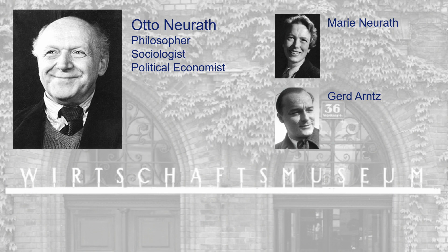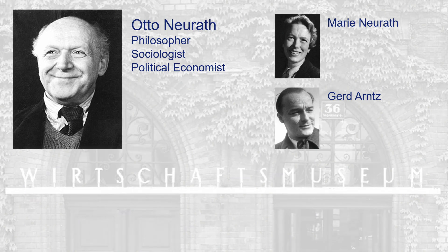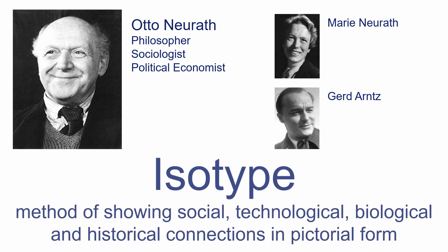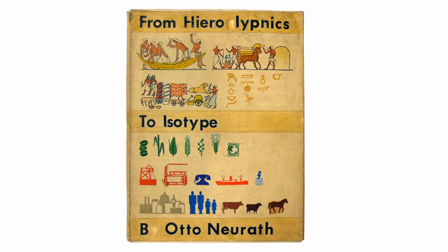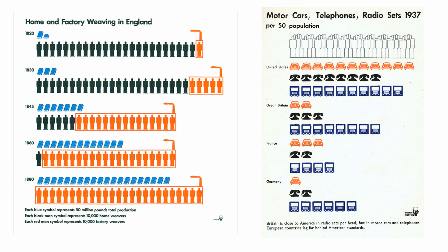These three folks on screen — Otto Neurath, his wife Marie, and Gerrit Ernst — were actually responsible for codifying a lot of the rules around the use of pictograms. They codified the system of isotypes, which is the use of pictograms that have information behind them. For example, in the book they wrote in the thirties, each pictogram is meant to demonstrate — say, a sheaf of wheat might represent a thousand or a hundred tons of wheat. That's the combination of a pictogram, which is the symbol, and the data behind it.